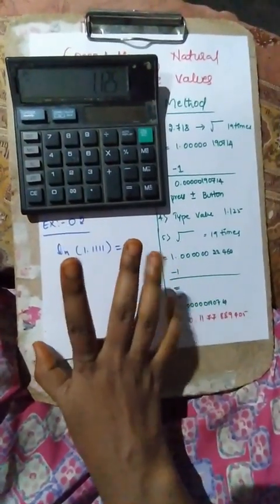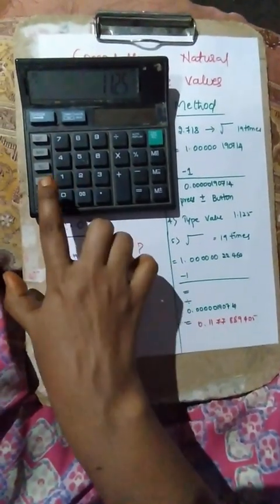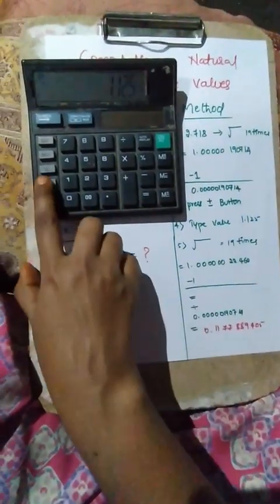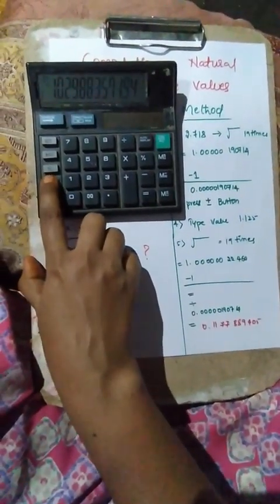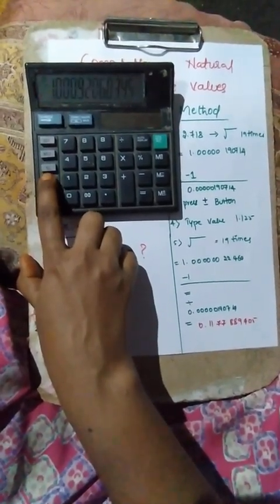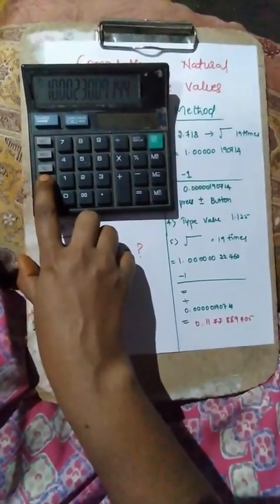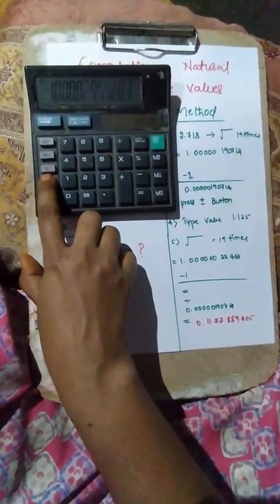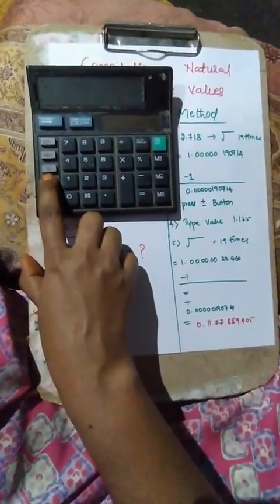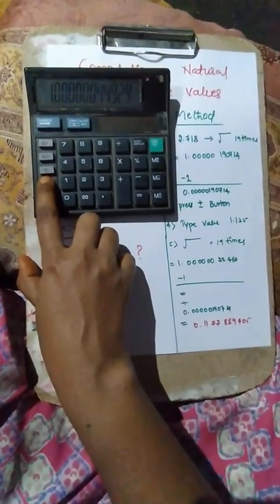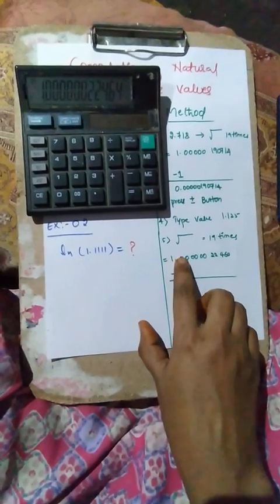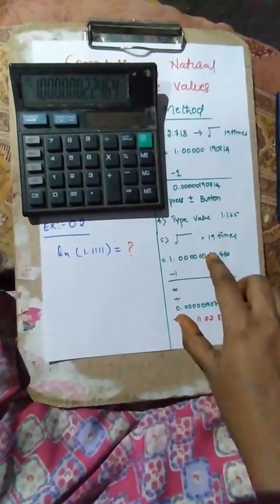Next, we have to press this square root button nineteen times: 1, 2, 3, 4, 5, 6, 7, 8, 9, 10, 11, 12, 13, 14, 15, 16, 17, 18, 19. So this is the value we get: 1.000024.